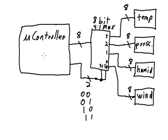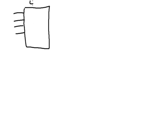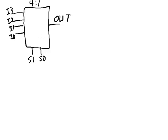Now, one more thing to consider: let's figure out the inner workings of these multiplexers. Remember, it's a combinational logic circuit. Here's a 4-to-1 MUX: we've got inputs I3, I2, I1, and I0, a single output, and two select bits S1 and S0.